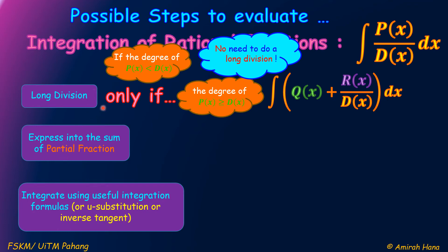If the degree of the numerator is less than the degree of the denominator, we don't need to do a long division. We can jump directly to step 2, which is expressing it into the sum of partial fractions.